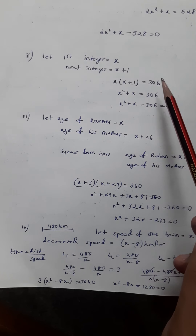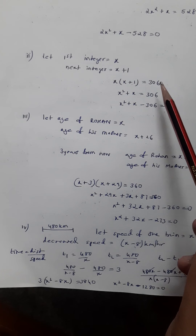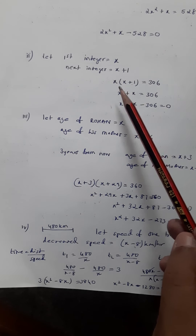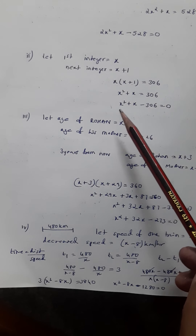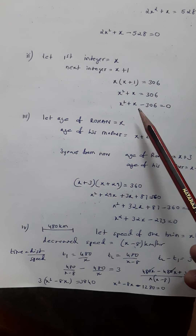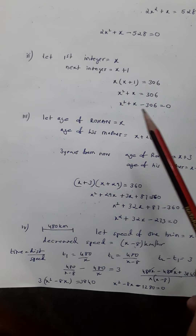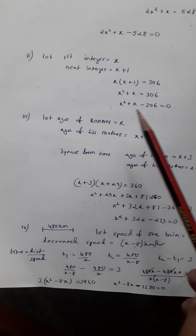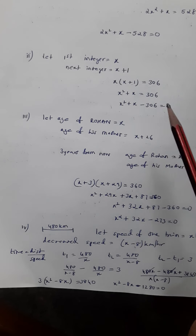So x into x plus one equals 306. Opening the bracket: x squared plus x equals 306, and bringing everything to one side you get x squared plus x minus 306 is zero. That's again a quadratic equation. At the moment, don't worry about how to solve this — you just have to make the quadratic equation.